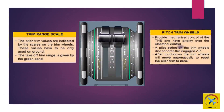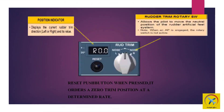The pitch trim values are indicated by the scales on the trim wheels, and these values are to be used on the ground only. The takeoff trim range is given by the green band. The pitch trim wheels provide mechanical control of the trimmable horizontal stabilizer and have priority over electrical control. A pilot action on the trim wheels disconnects the engaged autopilot. After touchdown, the trim wheels will move automatically to reset the pitch trim to zero.